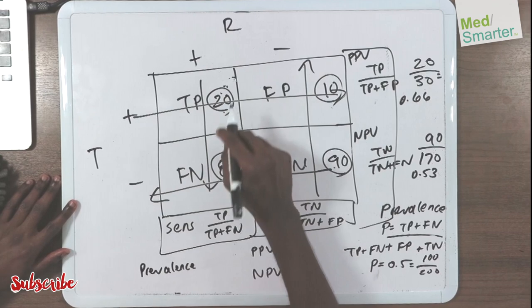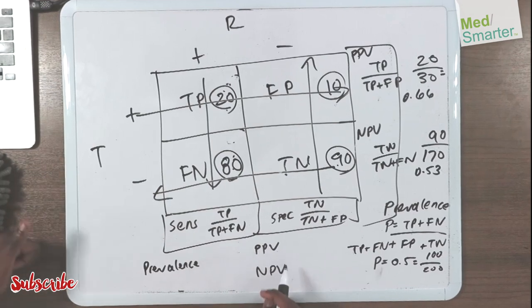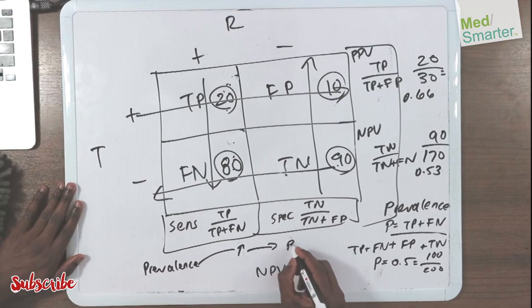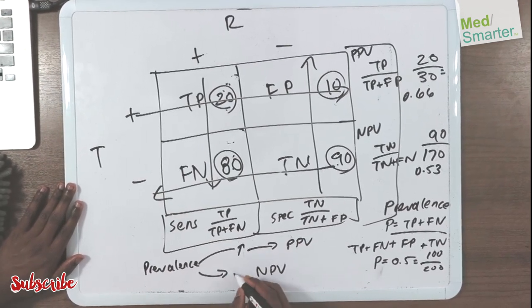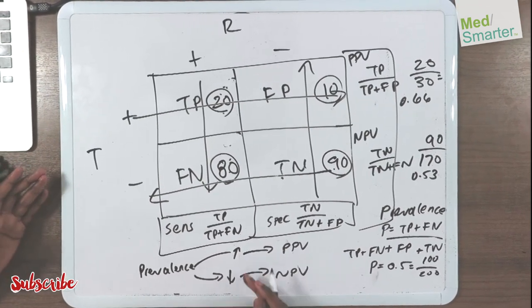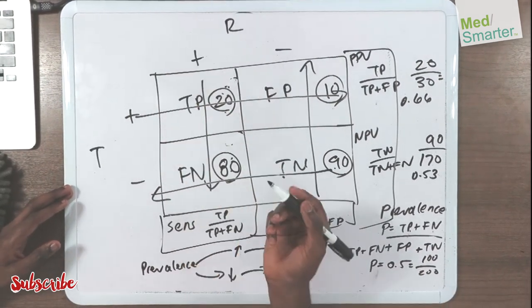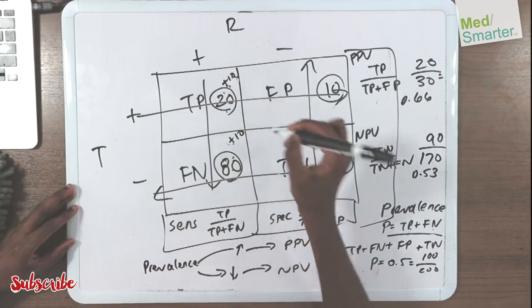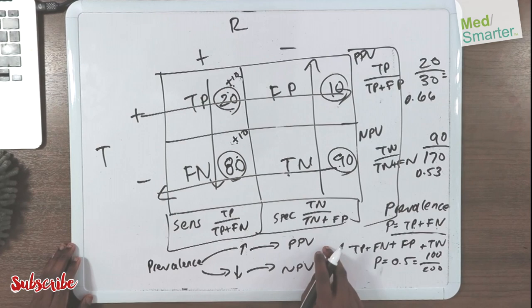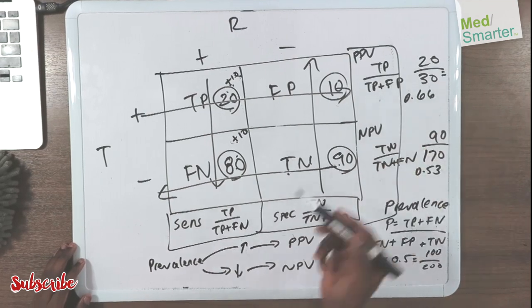Let's say your prevalence was the amount of people that actually had the disease — your numerator. So let's say your prevalence increases. If your prevalence increases, what does it do to your positive predictive value? How do you increase your prevalence? Prevalence was true positive plus false negative — it's this column here. So let's say your prevalence goes up by plus 10 and plus 10. As it relates to positive predictive value, we found that the positive predictive value was 20 divided by 30, which was 0.66.